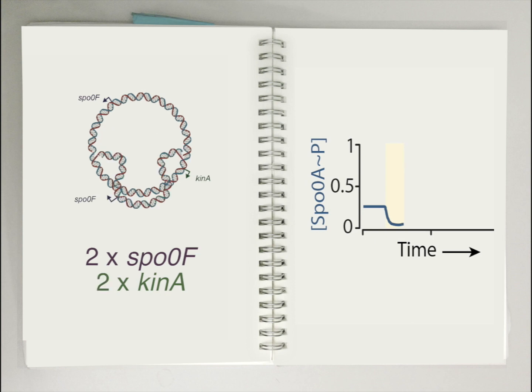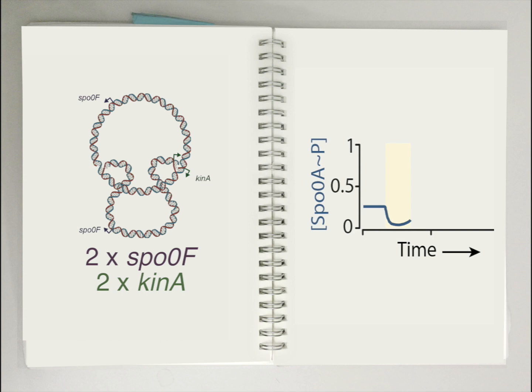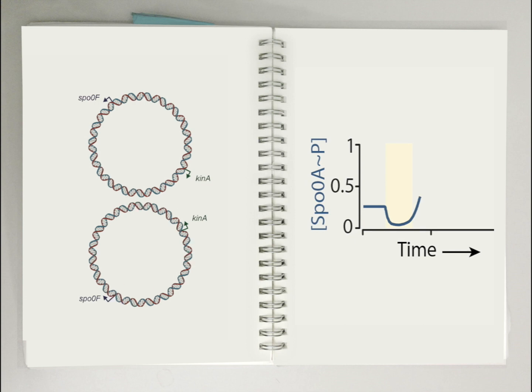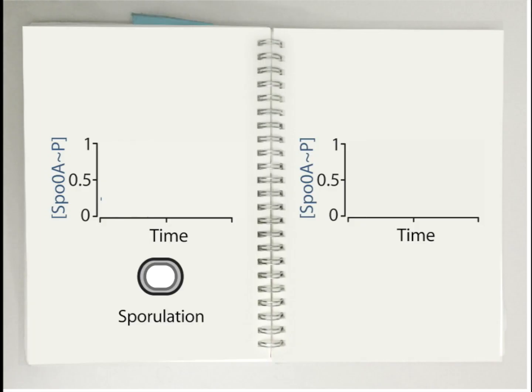When kinase, a gene located near the terminus, is finally replicated, its production catches up with Spo0F and Spo0A activity starts increasing. Due to the negative feedback and delay in the network, Spo0A activity overshoots and produces a pulse. If the pulse amplitude is large enough, the cells sporulate.